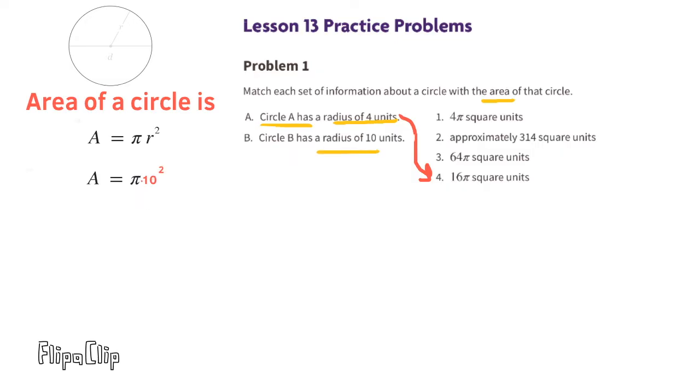B. Circle B has a radius of 10 units, so the area for circle B is pi times 10 squared, or pi times 100. Since pi is approximately 3.14, and we multiply 3.14 by 100, the area of circle B matches with 2, approximately 314 square units.